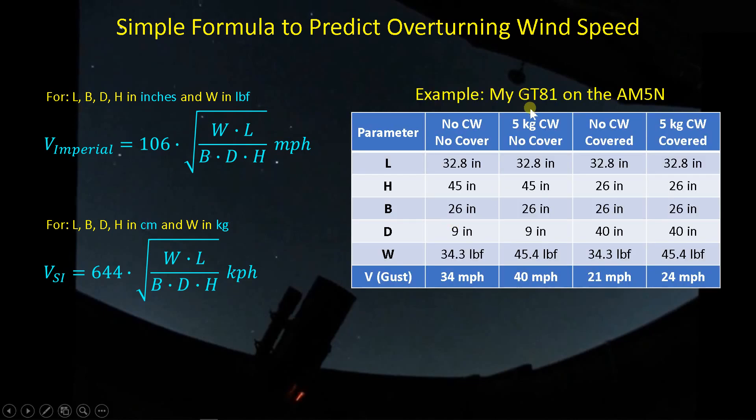A couple of examples, again, using my GT81. I've got two cases here where there's no cover and two cases over here where there is a cover. I've got a case in each where I don't have a counterweight, and then I have the case where I have the 5-kilogram counterweight. And likewise, over here, when it's covered, I've got no counterweight or have the 5-kilogram counterweight. And I go through these. These are the parameters that I measure with my system. And if I come down here and calculate the wind speed that can push this telescope over, there's actually a good story. When it's uncovered, I have less area for the wind to act on, so it takes a higher speed wind to cause the telescope to tip over. And of course, the counterweights do help. It raises the destabilizing wind speed from 34 miles per hour to 40 miles per hour, so that's something.